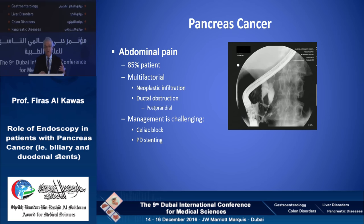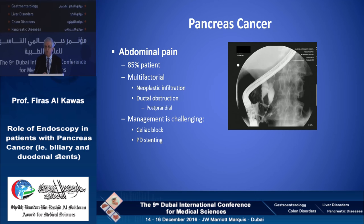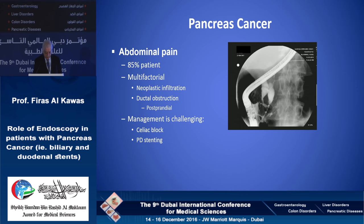The majority of patients with pancreatic cancer have abdominal pain, which is very difficult to manage. A small percentage — about 10% or less — have obstructive-type pain after oral intake, where a pancreatic stent may be helpful. In the other patients with more neoplastic infiltration, EUS-guided celiac plexus block may be helpful for pain management.